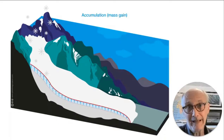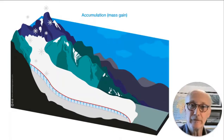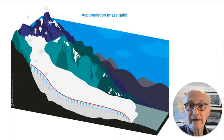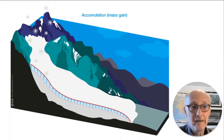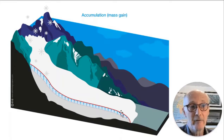Mass balance is all about the balance or the budget between inputs and outputs to and from a system. In a glacier system, the input is precipitation or snow in the form of accumulation. In this diagram, over the course of time a layer of snow is building up on the glacier. You can see a little bit more snow is building up in the higher layers of the glacier — the higher altitudes, the colder environment, the snowier environment — and a little bit less down at lower elevations.